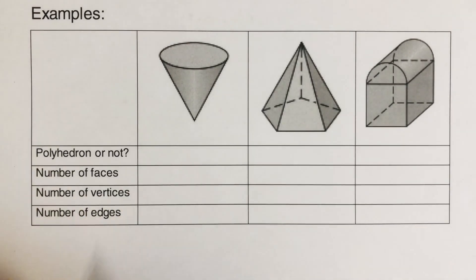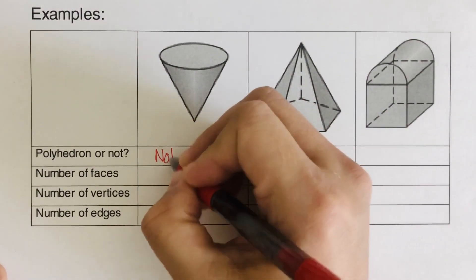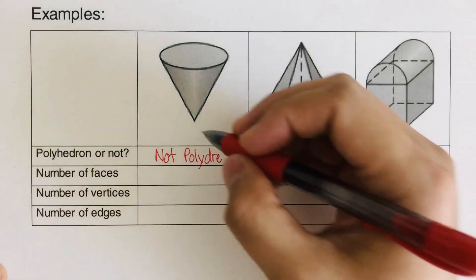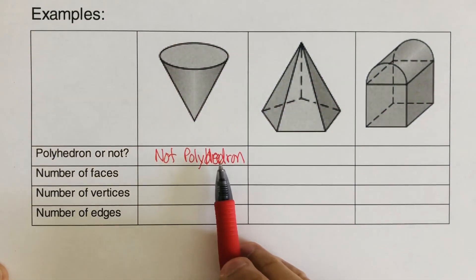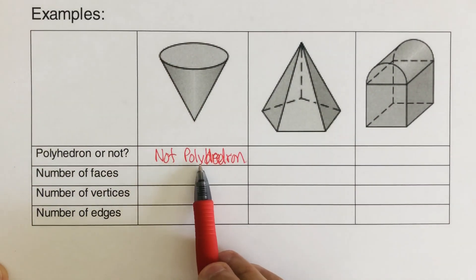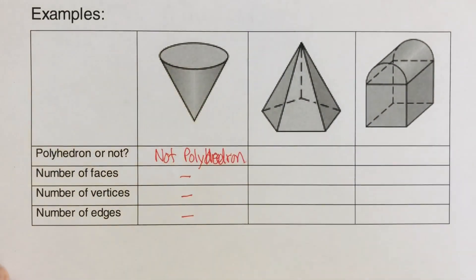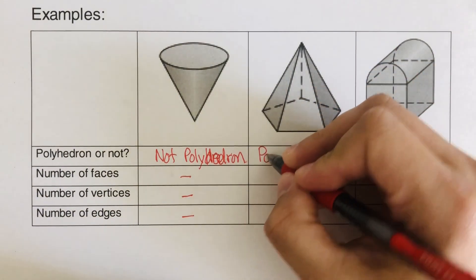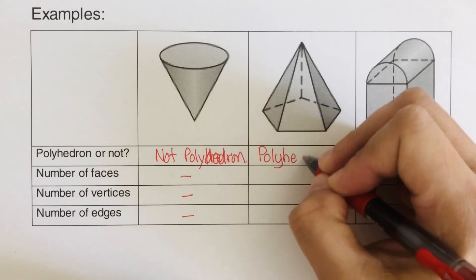So let's go over the problem here. The first one right here is not a polyhedron. The reason is it's not made up of straight edges, so that's not a polyhedron — we just leave this blank. The next one right here is a polyhedron because all of the edges are straight lines.